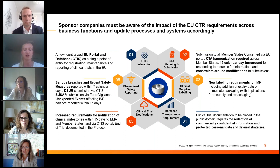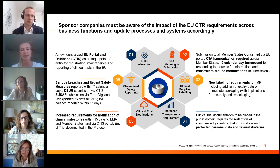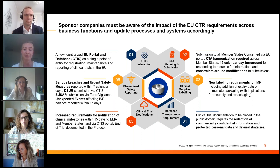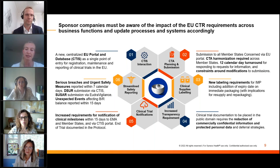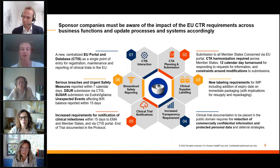The fourth area is around transparency requirements, which is quite a significant change under EUCTR. One of its aims is to ensure more data is available to the public. Sponsor companies need to ensure steps are in place to protect personally protected data (PPD) and commercially confidential information (CCI). This can be done through redaction of certain information or developing deferral strategies for the delayed publication of some information.